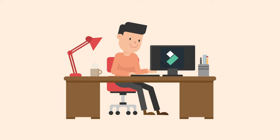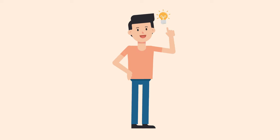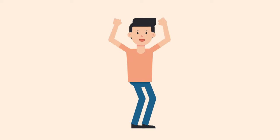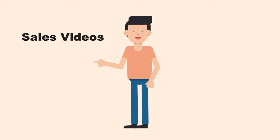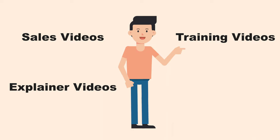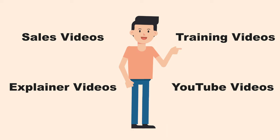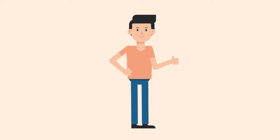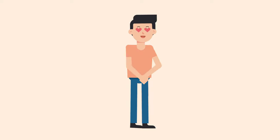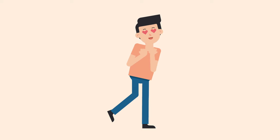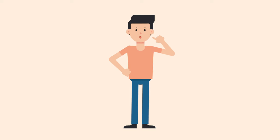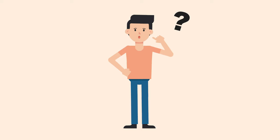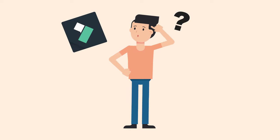So you've been using Filmora for a while and decided it's time to make an animated video. You see cool animated videos everywhere — sales videos, explainer videos, training videos, or YouTube videos. So of course you want to make animations as well. They're awesome! And you might be wondering: how can you make professionally looking animations in Filmora?